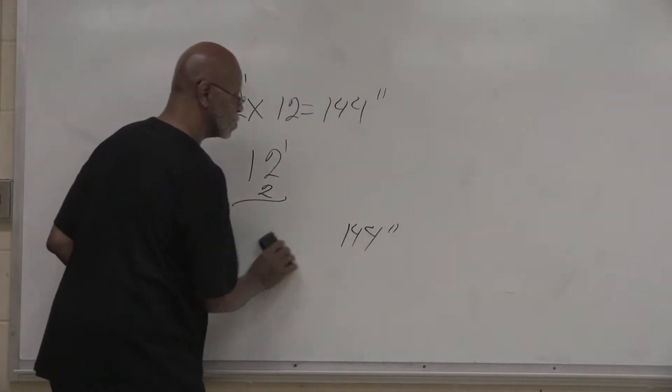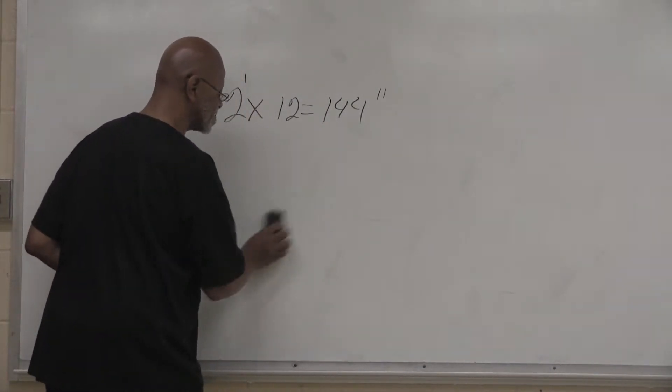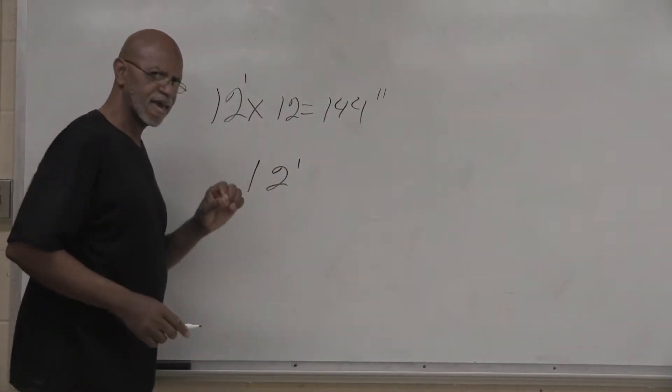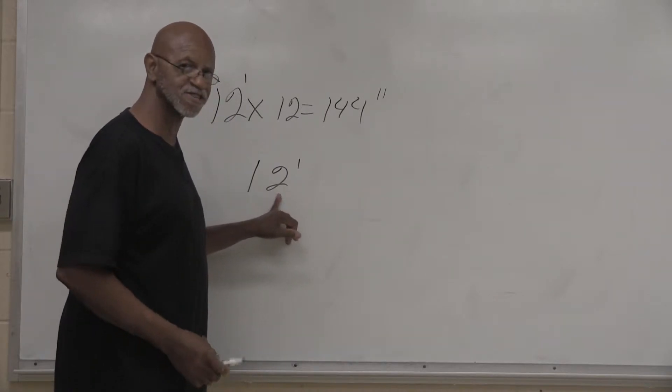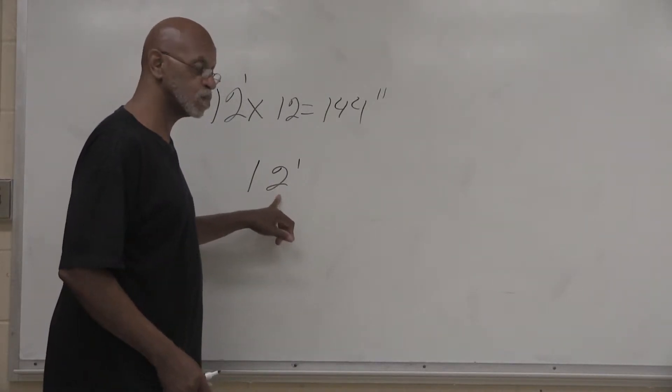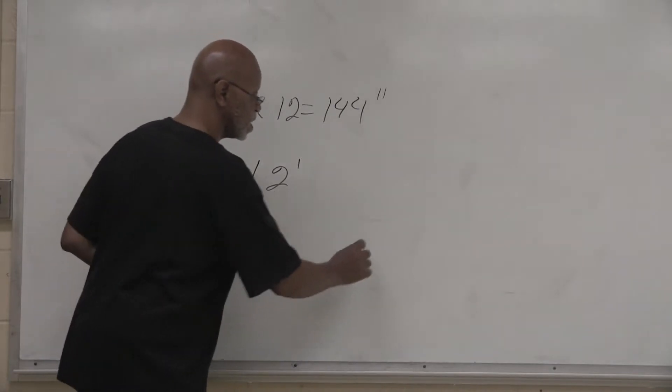I'm going to do it again. So we're going to take 12 feet and convert it to inches. We're going to double the numbers: 2 plus 2 equals 4. That becomes the answer.